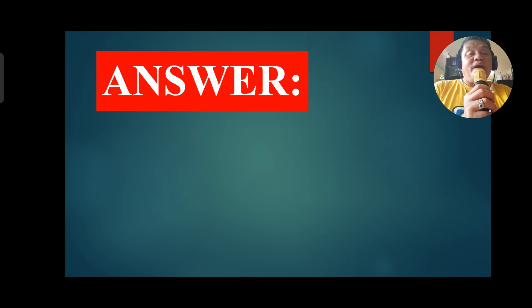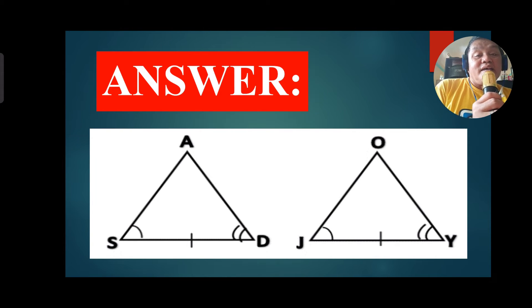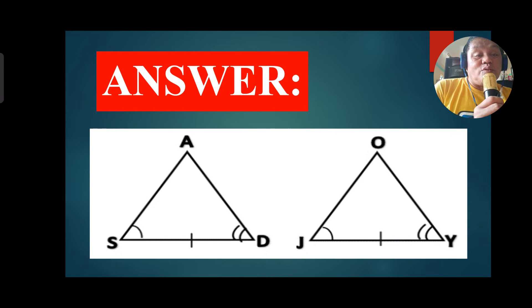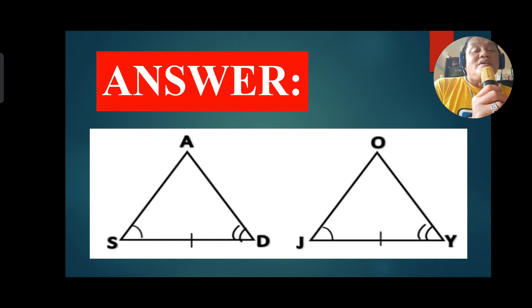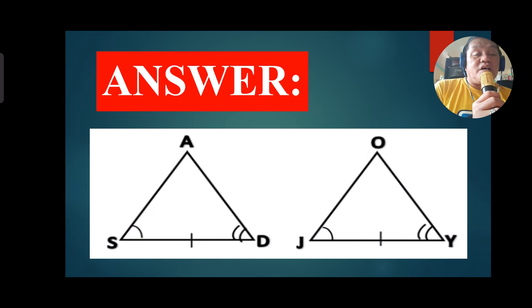We have the answer: the two triangles are drawn, and Triangle SAD is congruent to Triangle JAY by the ASA Congruence Postulate.